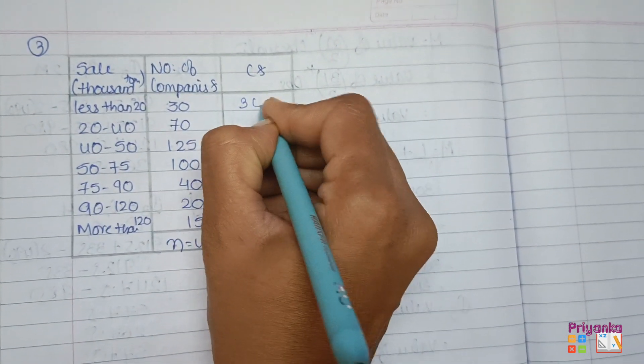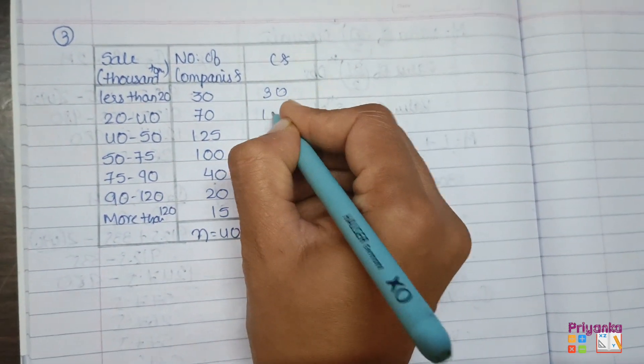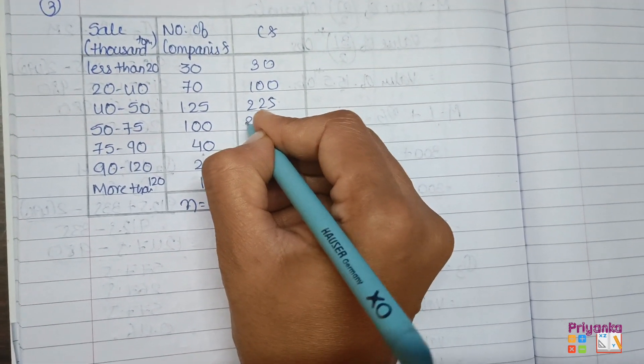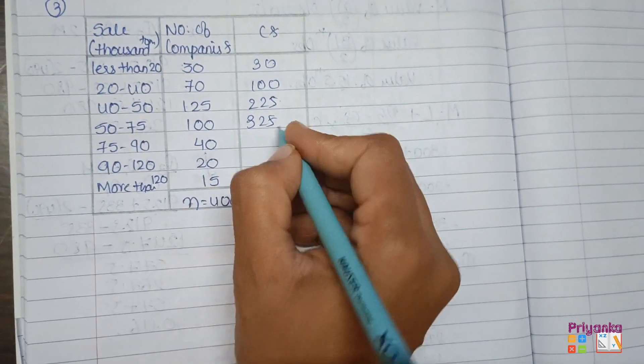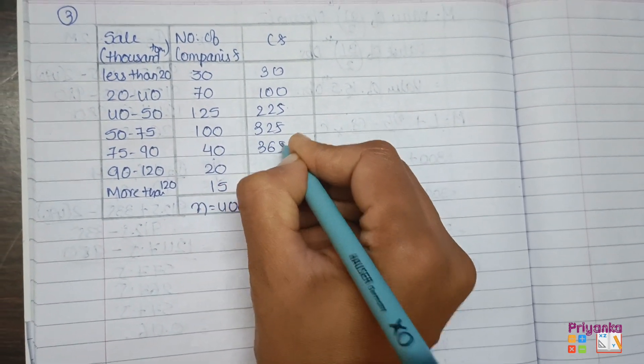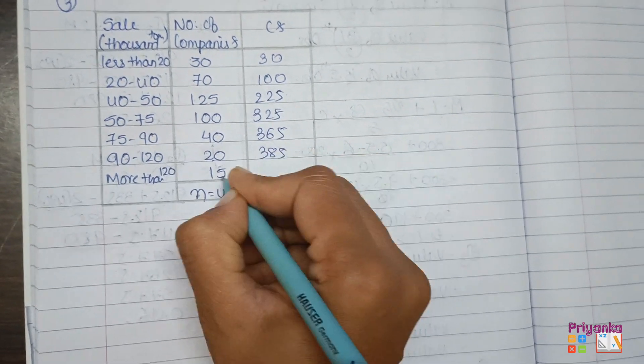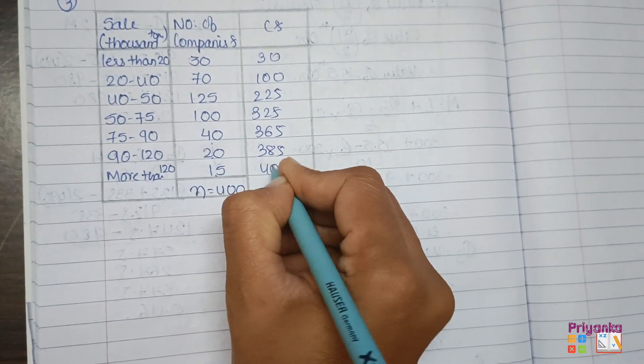So 30, 30 plus 70 is 100, 100 plus 125 will be 225, plus 100 will be 325, plus 40 will be 365, plus 20 is 385, plus 15 that is 400.